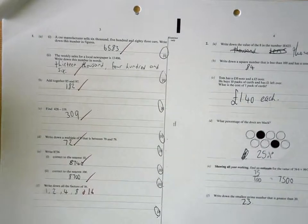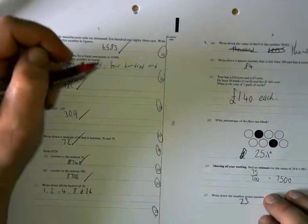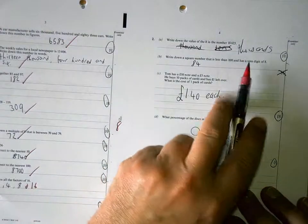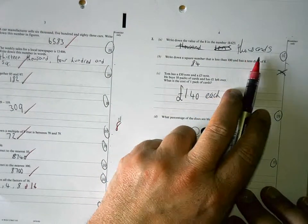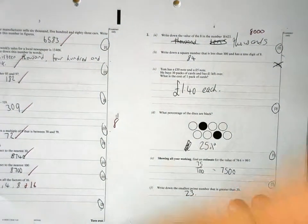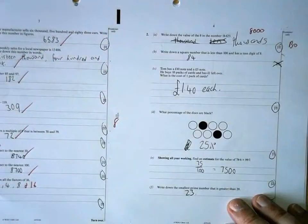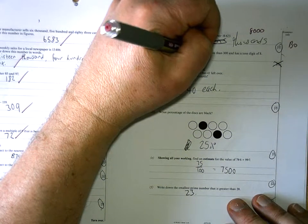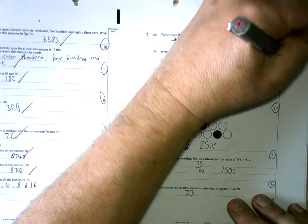You're missing 16 on that bottom one there. It's not enough to say thousands, you need to tell me its value which is 8,000. 84 is not a square number, 9 nines are 81. 81 is the square number.